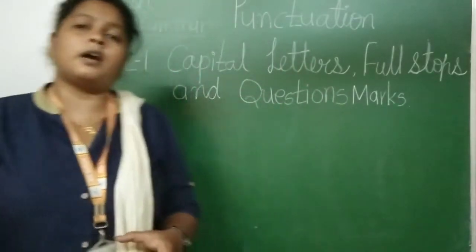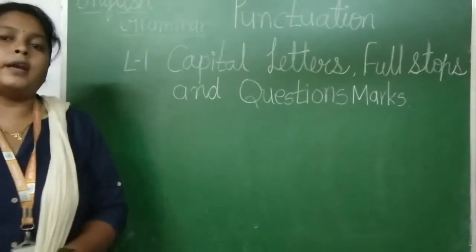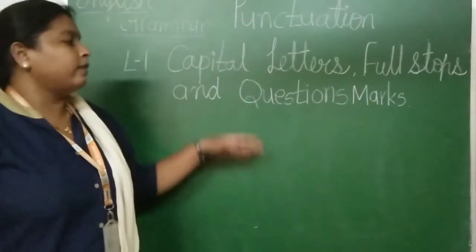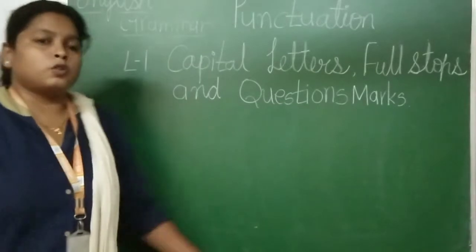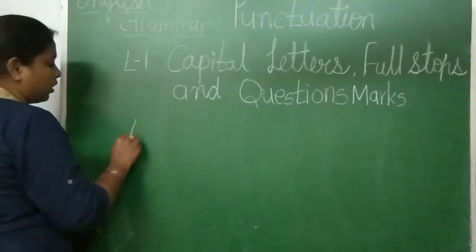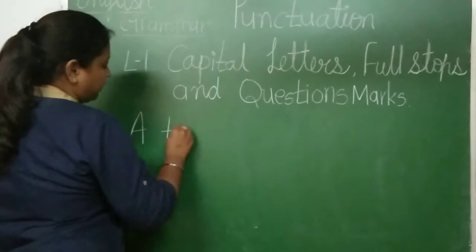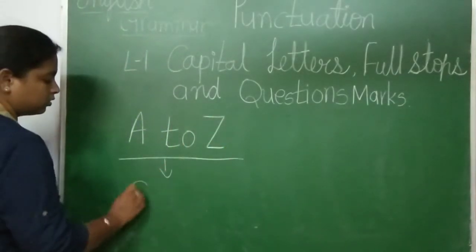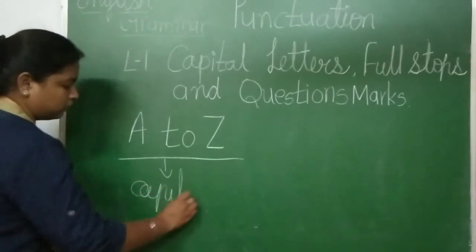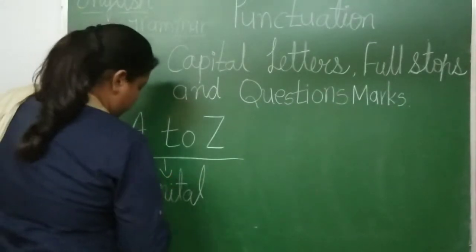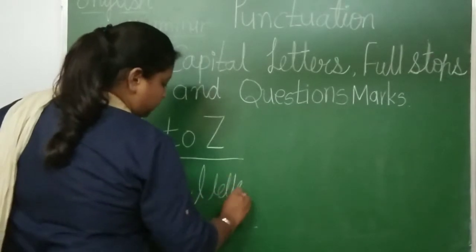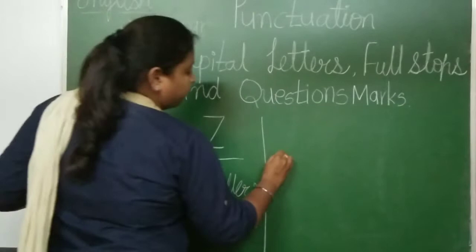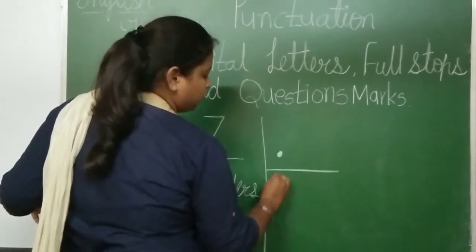So what are capital letters, what are full stops, and what are question marks? Capital letters — that means you already know that A to Z written this way are called capital letters. And after that, full stop — this is the full stop.